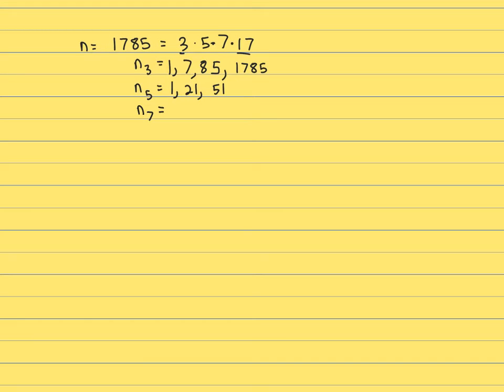The number of possible Sylow 7 subgroups is either going to be 1 or things congruent to 1 mod 7 that divide 3 times 5 times 17. 3 times 5 is 15. That's congruent to 1 mod 7. 85, that's congruent to 1 mod 7. And of course, I found a typo. That shouldn't be 1785. That should be 1785 divided by 3. Whatever that is.